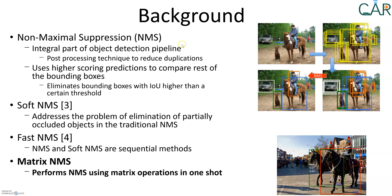The way non-maximal suppression works is that for each object we have several bounding boxes, each with a confidence score. We take the bounding box with the highest confidence score first, then compare the remaining boxes to see how much they overlap with it. If the overlap exceeds a user-defined threshold, we eliminate that bounding box. Ultimately, we are left with fewer bounding boxes per object, possibly just one.